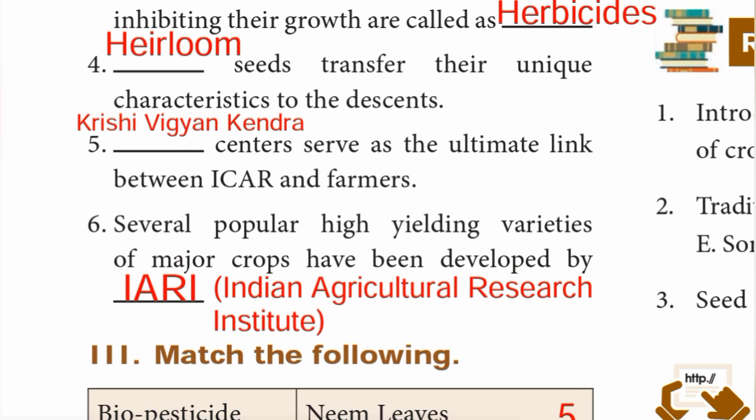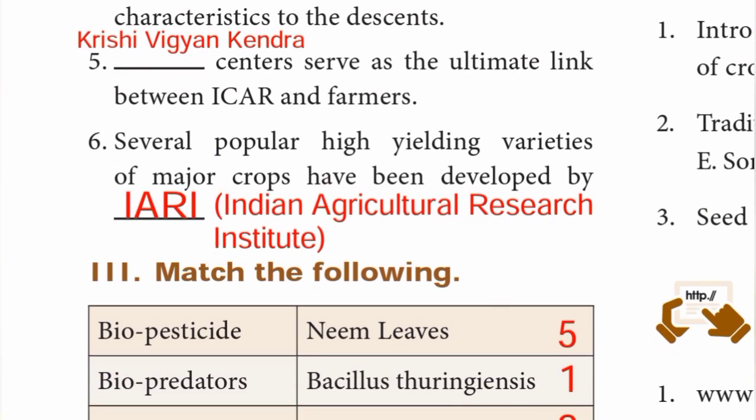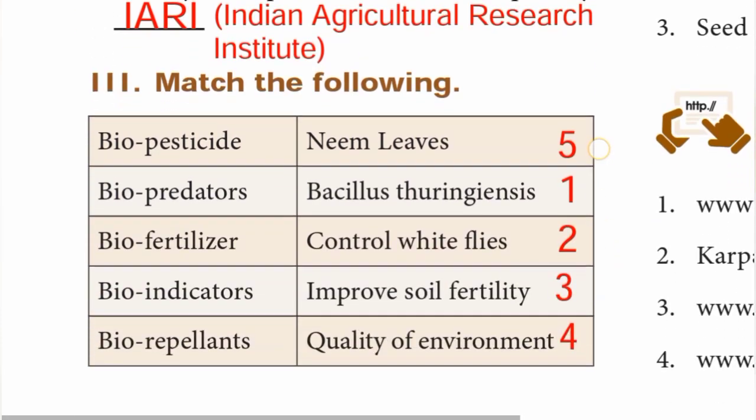Number 5: Krishi Vigyan Kendra centers serve as the ultimate link between ICAR and farmers — answer is Krishi Vigyan Kendra. Number 6: several popular high-yielding varieties of major crops have been developed by IARI — Indian Agricultural Research Institute.